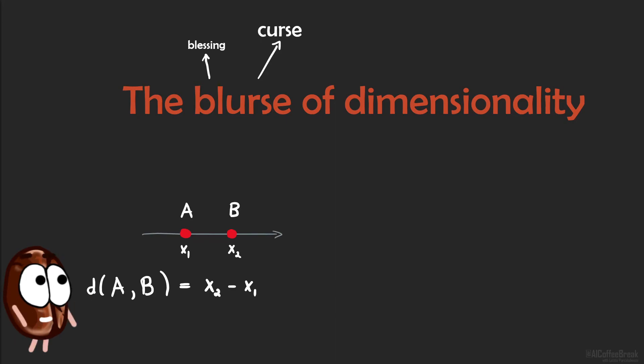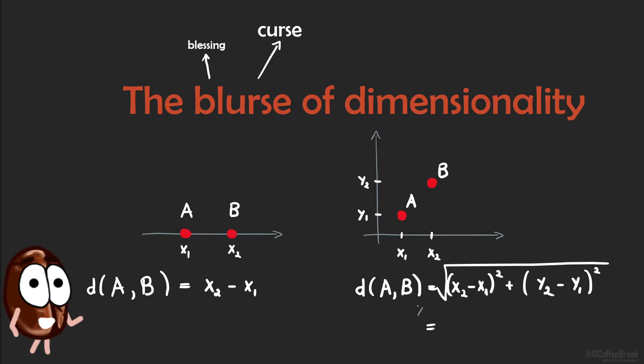In two dimensions, the distance computations become a little more difficult, since we now have more coordinates for our points. And if we assume that the points lie on the diagonal of a cube, forming a 45-degree angle with both axes, then the distance simplifies a little. It becomes the difference between the coordinates in one of the dimensions, say x, multiplied by the square root of 2. And 2 happens to be the number of dimensions.